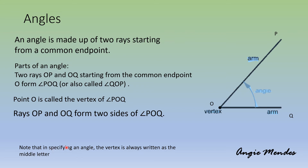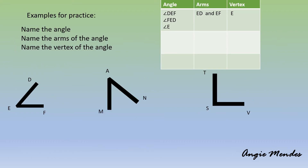Now when we are naming an angle, remember that we always write the vertex in the middle. We cannot name this angle QP O because the angle is made up of two rays which start from a common end point, so we will always write the vertex as the middle letter whenever we name an angle.